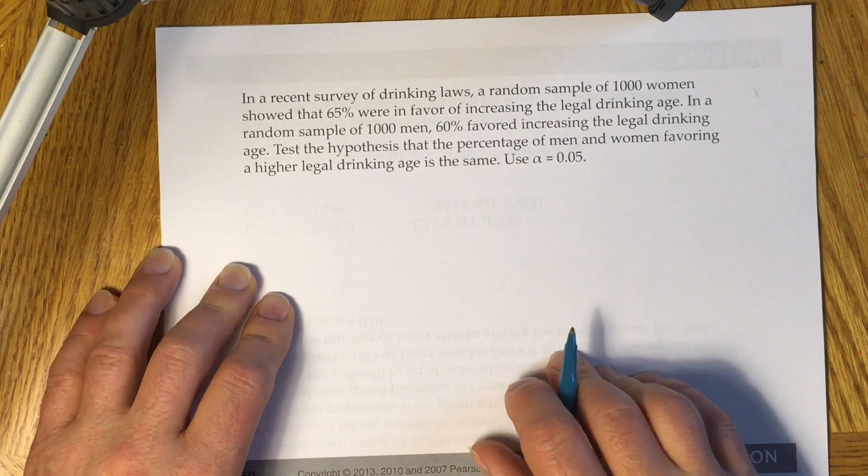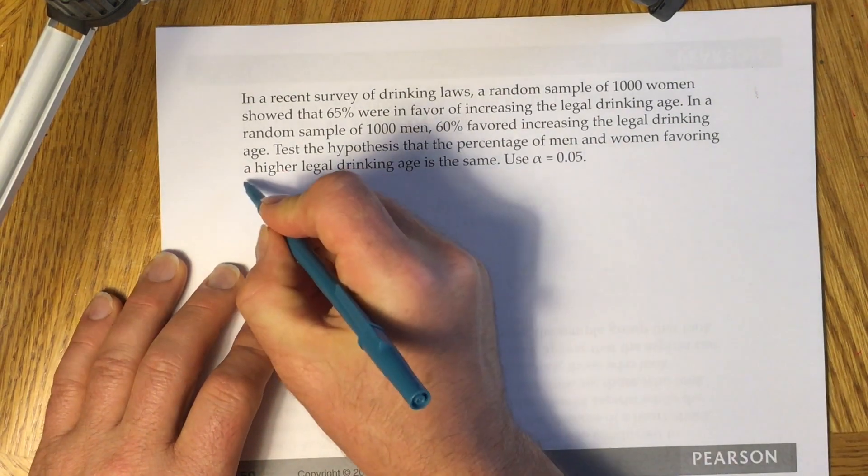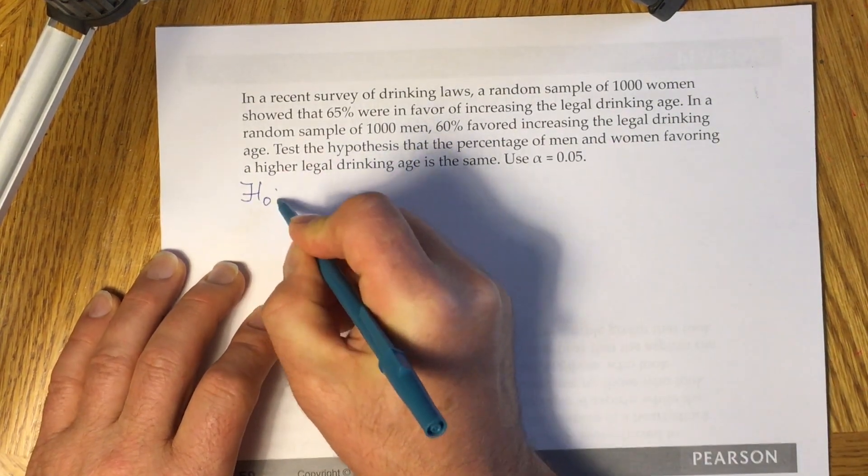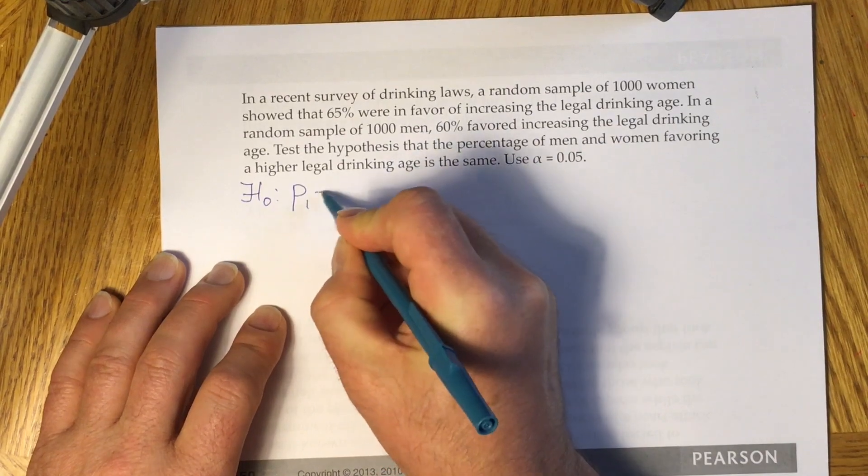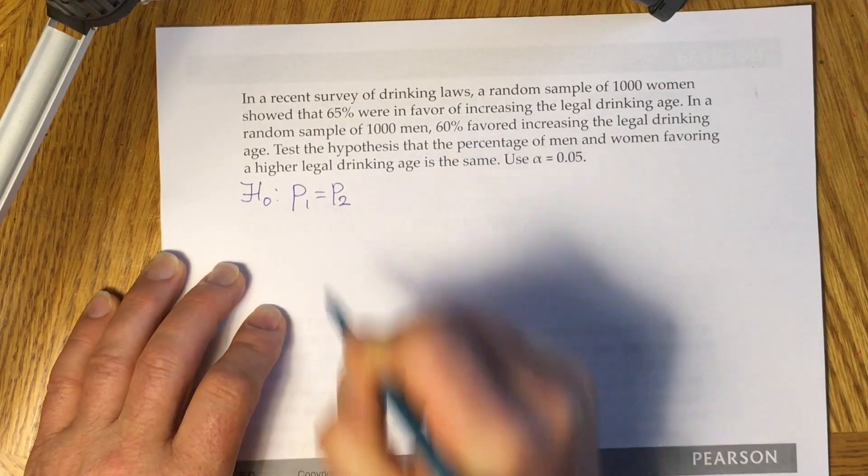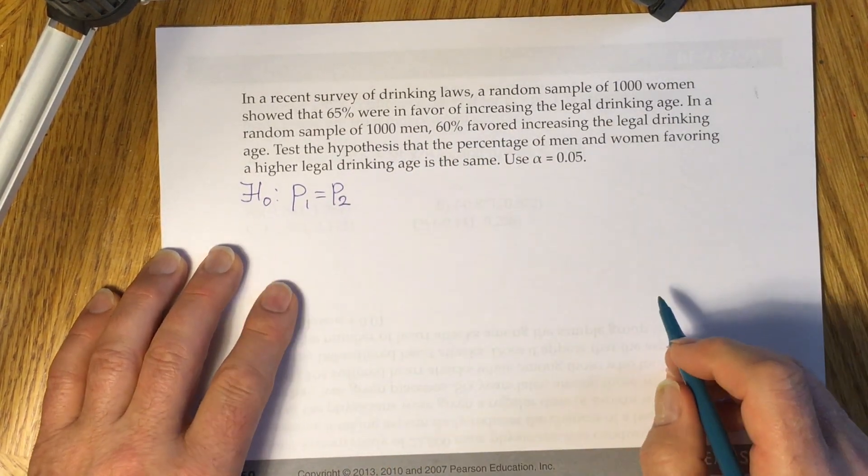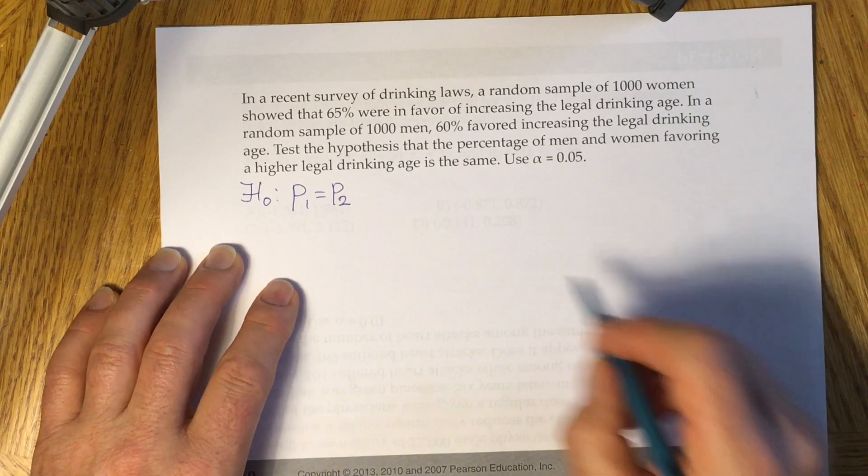Use alpha 0.05 significance level. We'll start from the null and alternative hypothesis. As usual, null hypothesis is always the same: p1 equals p2 whenever you compare proportions from two different samples.